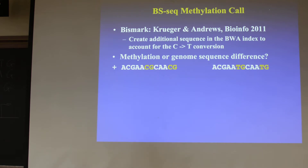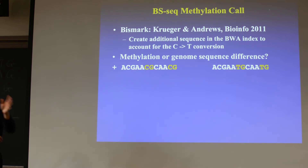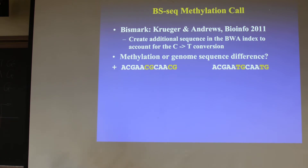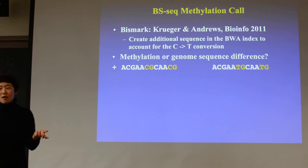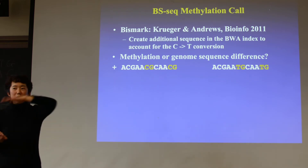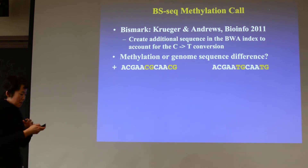One suggestion from students: sequence twice — once without bisulfite treatment. That's really expensive though. A better informatically approach: look at the complementary strand and see if it matches. When you sequence a genome at 30X coverage, roughly half the reads are on the top strand and half on the bottom strand.